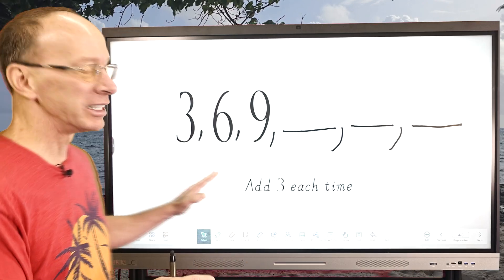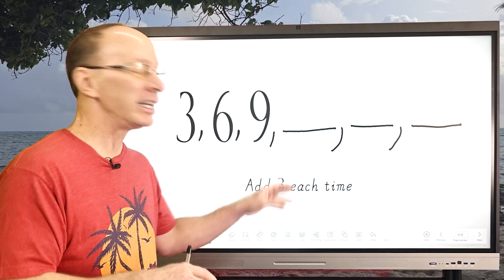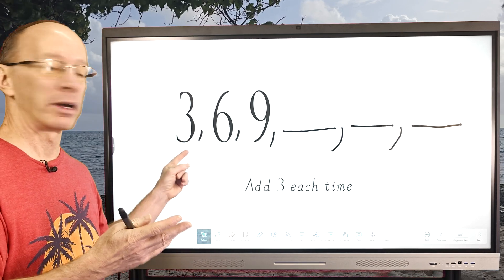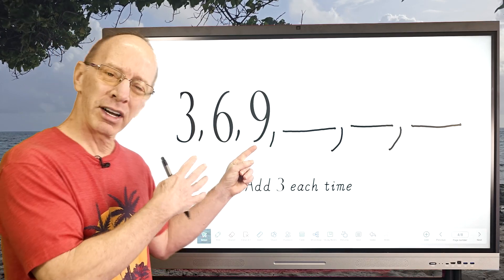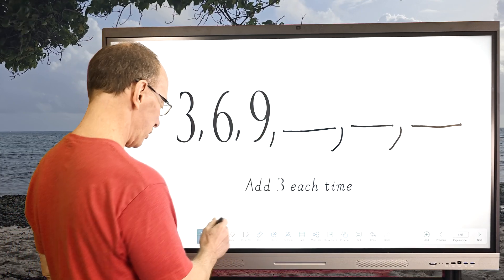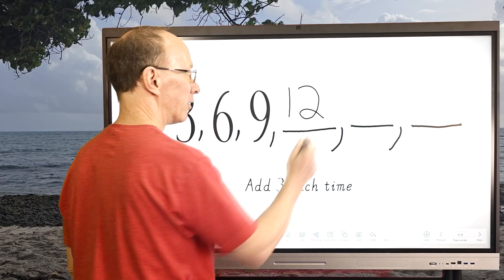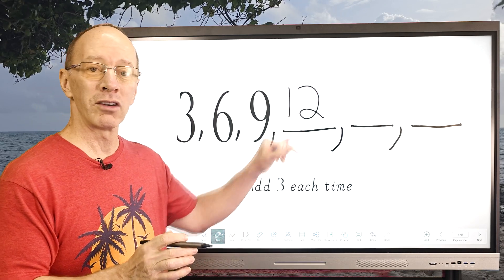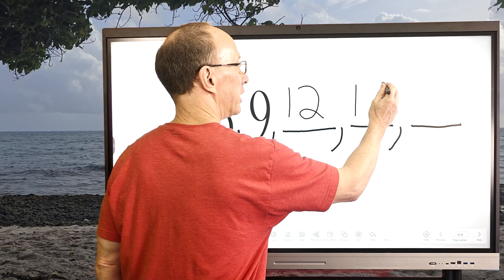So with these number patterns, we have some rules. This one says we have to add three each time. So let's take a look at this. We have three, so three plus three would equal six. Then six plus three would equal nine. Can you figure out what the next one's going to be? Nine plus three equals, that's right, twelve. So I'm going to go ahead and put twelve right here.